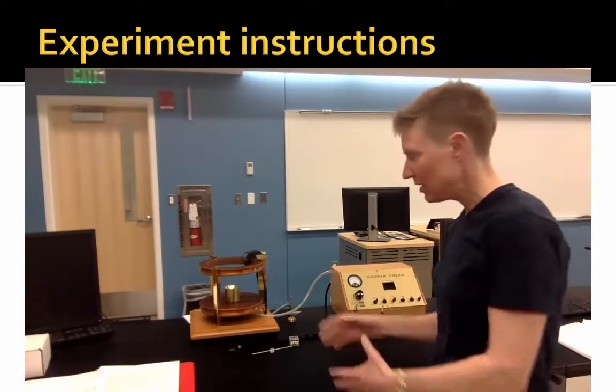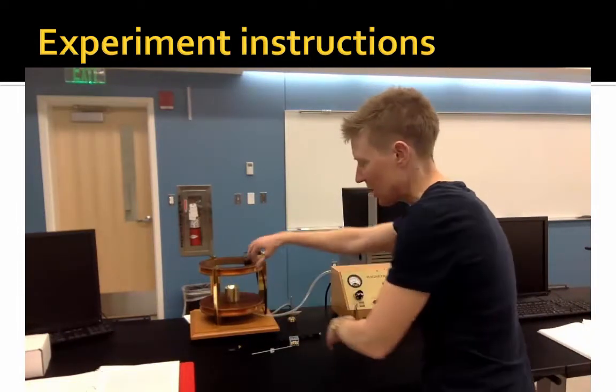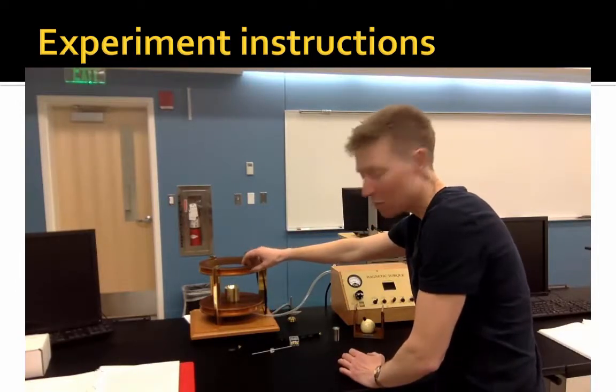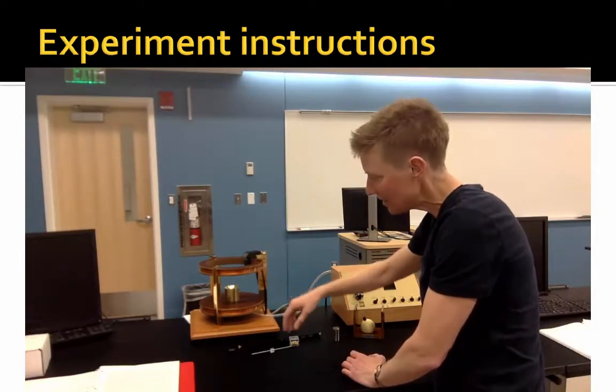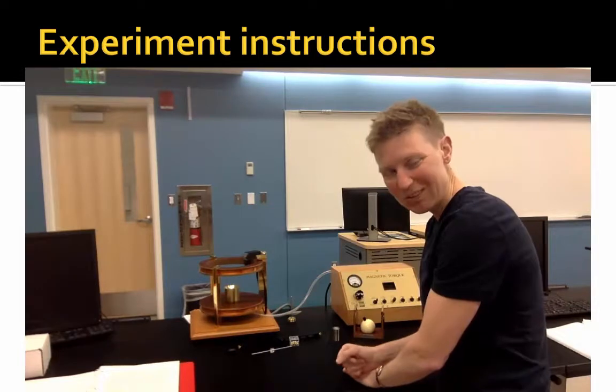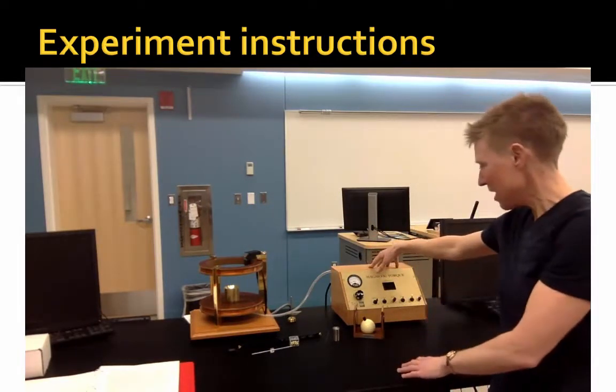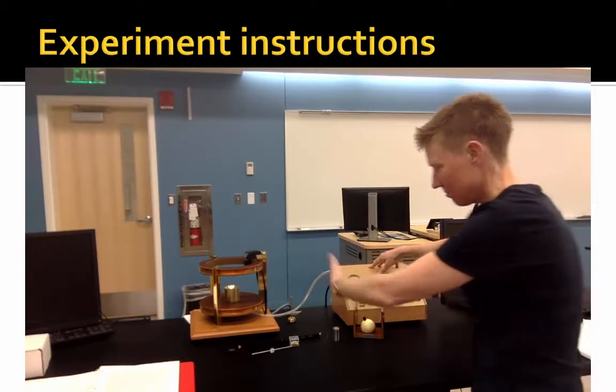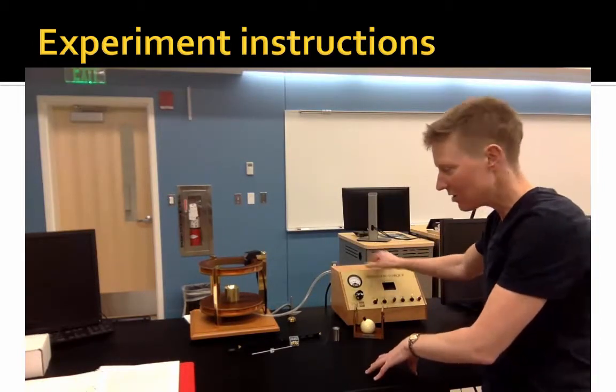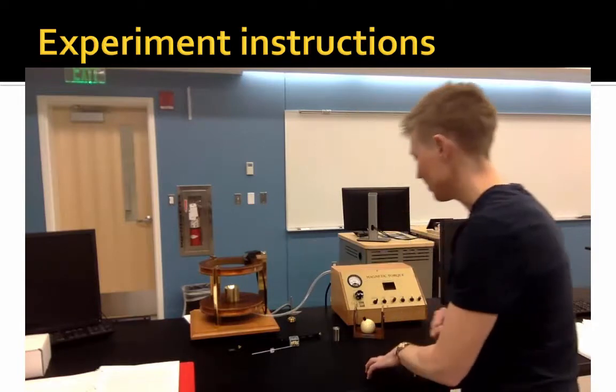So the main components are this apparatus, which has coils of wire, which will create our magnetic field. And it has a holder with a little air jet. The power and et cetera is here. So our switches are over here, and then we play with things over here.